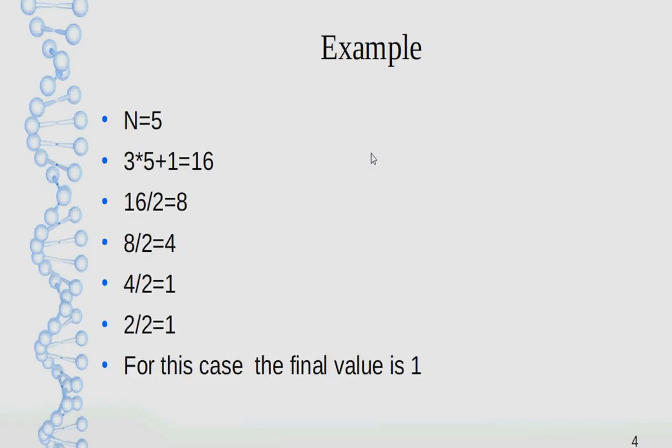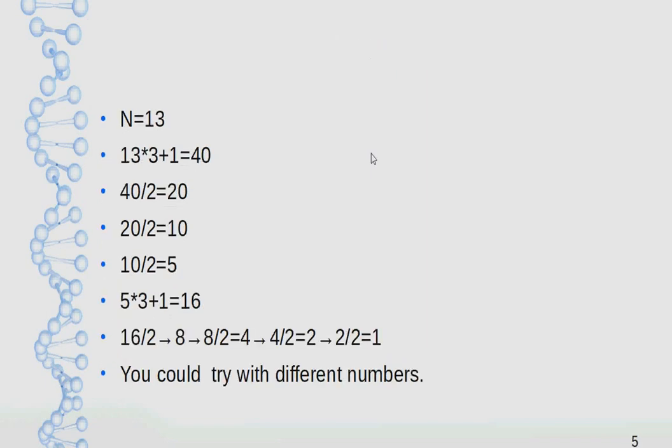For n equals 5, we can see that the final value of the procedure will be 1. For n equals 13, the final value of the operations will be 1. You could try it with different numbers.